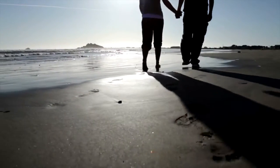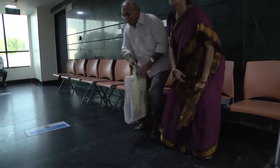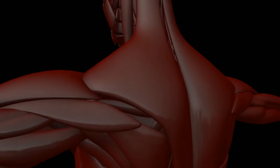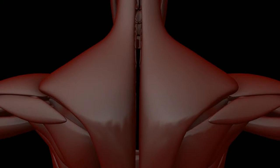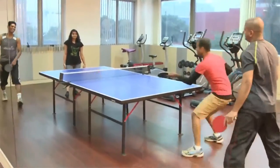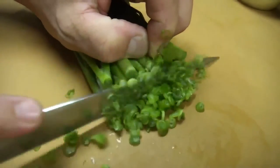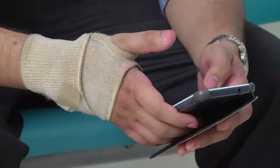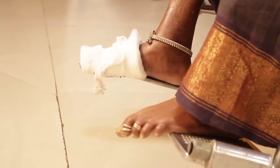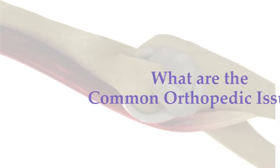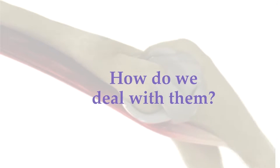Every time we walk, run, sit or stand, we use our bones, muscles and joints. These provide support to our body and help form our shape. Without these important body parts, it would be difficult to do our day-to-day activities. However, like any other body part, bones too are susceptible to various injuries and diseases. So, what are the common orthopedic issues and how do we deal with them?